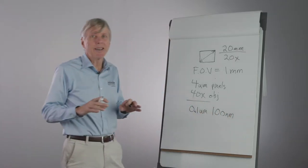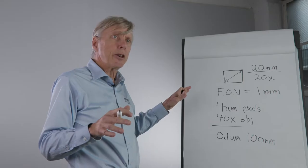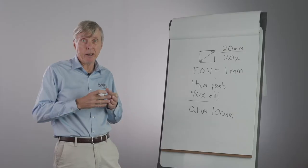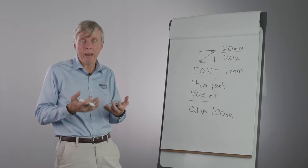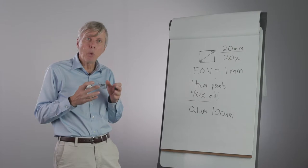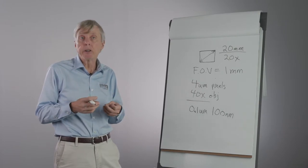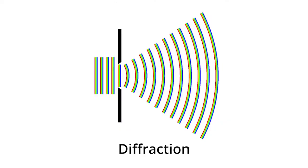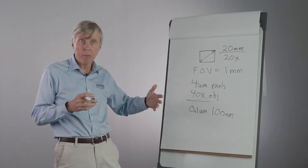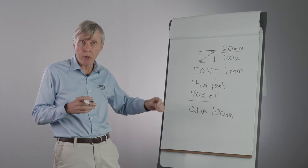But it turns out it isn't quite that simple. There's a property of light, which is that in addition to acting like a particle, a photon, it also has a wave property. And the wave nature of light leads to a condition called diffraction. And with diffraction, limits are set on resolution. And to better understand how that works, we need to explore another concept, which is called numerical aperture.